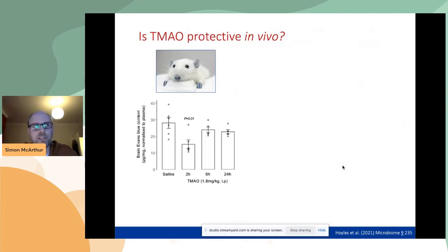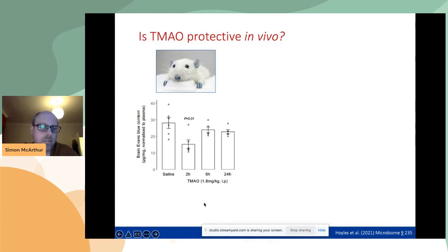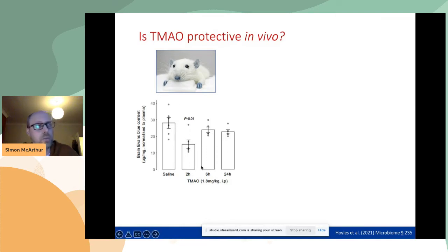That's all in vitro, so we wanted to see if it really happens in vivo. We switched to an animal model using mice and a classic blood-brain barrier permeability assay where you inject Evans Blue dye, which binds to albumin and turns the entire mouse blue except for the brain and spinal cord under normal conditions. If you inject TMAO at a dose that roughly doubles circulating levels, you immediately see a reduction in even the small fraction of Evans Blue that gets into the brain — tightening the blood-brain barrier — which then tails off with the same kinetics as TMAO being excreted.